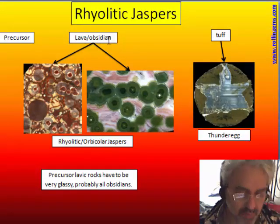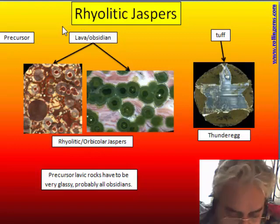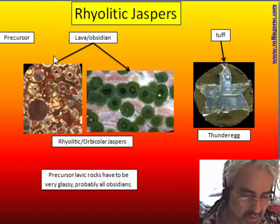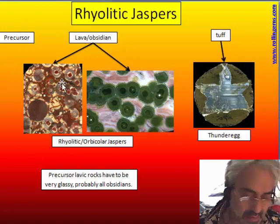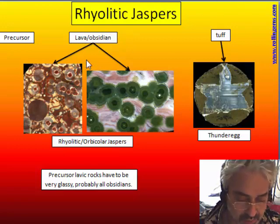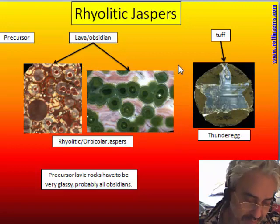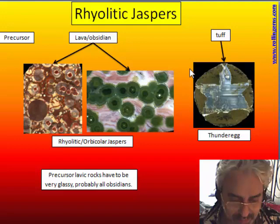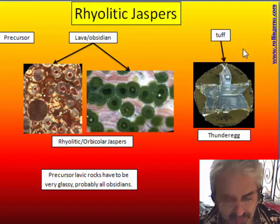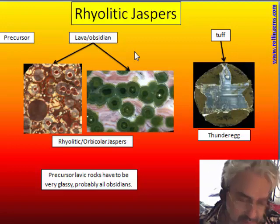This is the scheme of rhyolitic jasper we saw in the last chapter. The main group is made of rhyolitic jasper that is spherulitic inside a jasper of many colors, and in particular orbicular jasper, which are a small group of very silicified rhyolitic jasper. Thunder eggs are the same but formed in tuff — mostly in tuff or welded tuff, not really in obsidian like the other group.